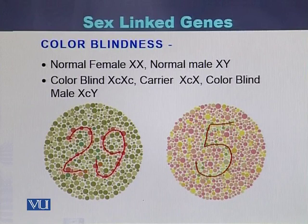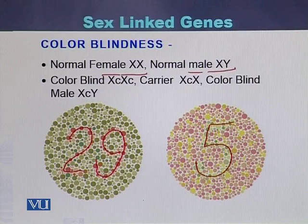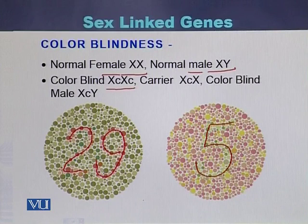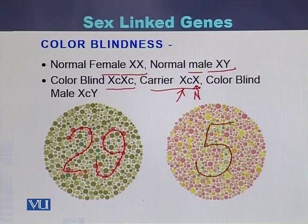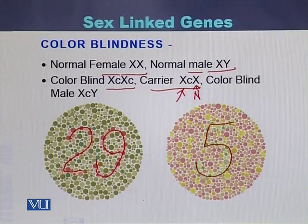Looking at how color blindness inherits: a normal female is XX and a normal male is XY. A female will have the disease if she has both affected alleles. If she has one normal copy of the X chromosome and one affected allele, she will be a carrier. In color blind males, the allele on the X chromosome is the affected one.